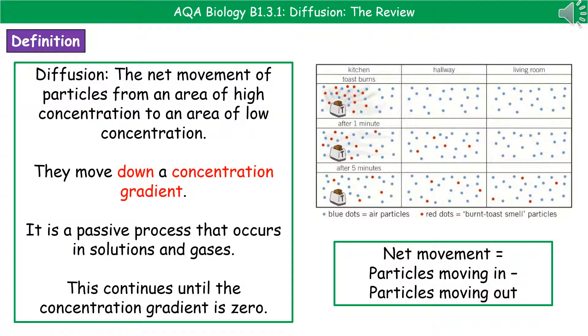Welcome to our review on diffusion. First thing we need to know is the definition for diffusion. Quite simply, diffusion is the net movement of particles from an area of high concentration to an area of low concentration. So the particles are moving down a concentration gradient because they're going from high to low.